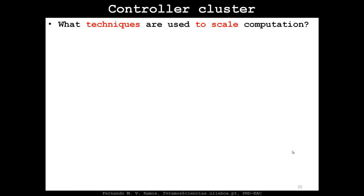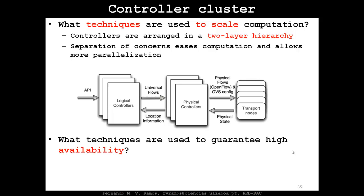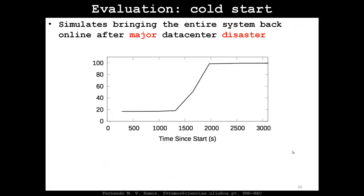The third challenge was scaling computation. NVP divides controllers into a two-layer hierarchy of physical controllers and logical controllers. By separating concerns, they enable more parallelization to achieve scale and guarantee high availability. They maintain hot standbys at both layers, essentially replicating SDN controllers.